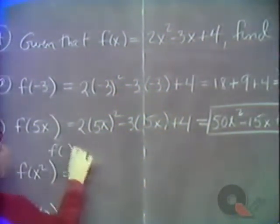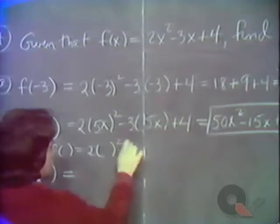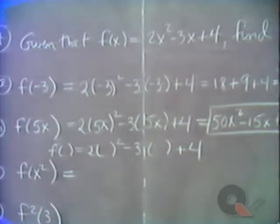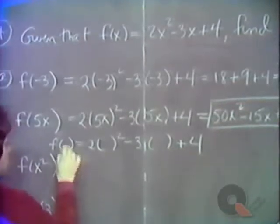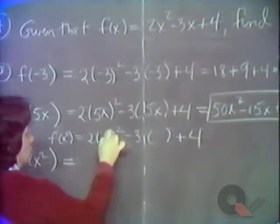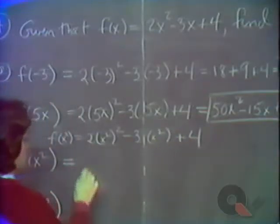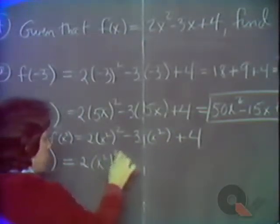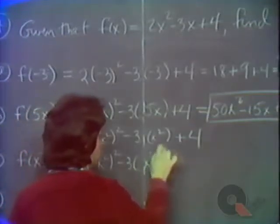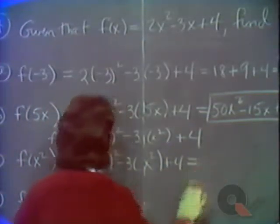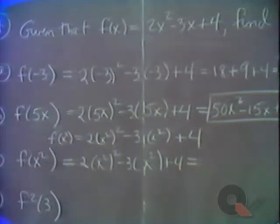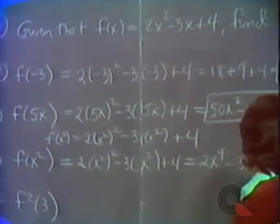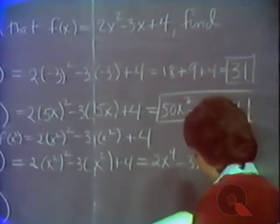Reminding ourselves: f of something is 2 times that something squared minus 3 times that something plus 4. f of x squared would be 2 times x squared squared minus 3 times x squared plus 4. x squared squared is x to the 4th, giving 2x to the 4th minus 3x squared plus 4.